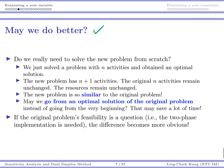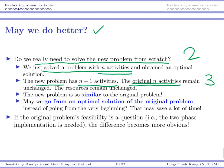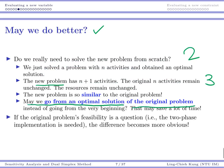But may we do better? Do we really need to solve the new problem from scratch? We just solved a problem with n activities, which means 2 activities, and now we get a new problem with n+1 activities, 3 activities. The original activities remain unchanged, the resources also remain unchanged. The new problem is so similar to the original problem. Maybe we may go from an optimal solution of the original problem and do a few iterations to get to the end. Maybe we don't need to go from the very beginning.